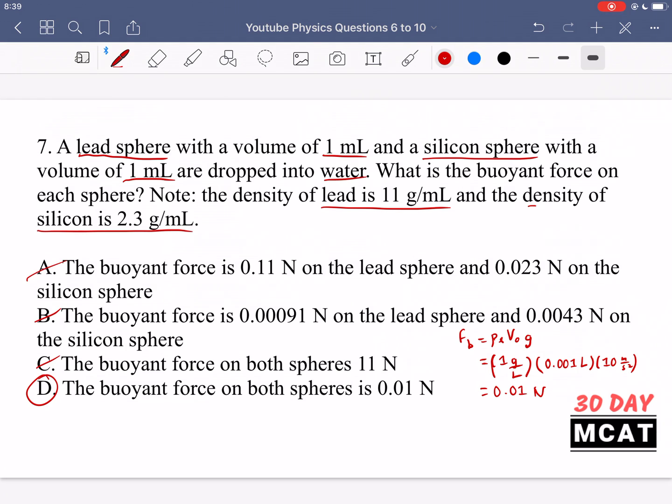The buoyant force on both of them is going to be the same. It doesn't differ because the buoyant force is, once again, dependent on the weight of water displaced by an object. And the density that we care about in this equation is the density of the liquid, not the density of the objects.